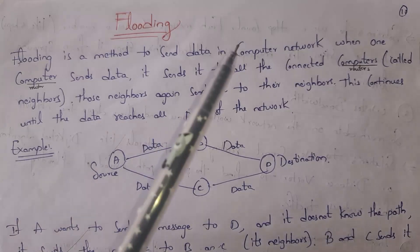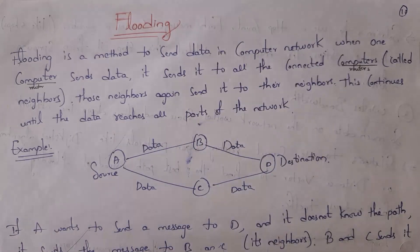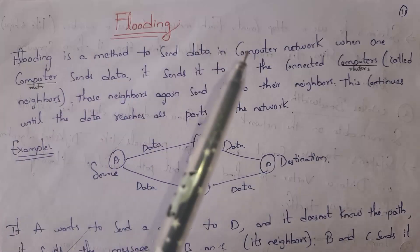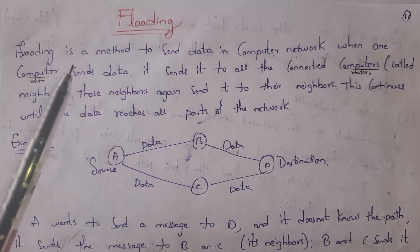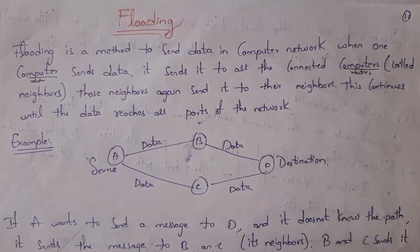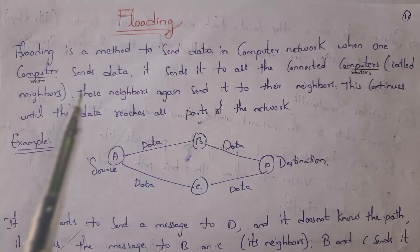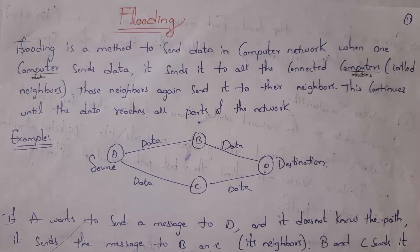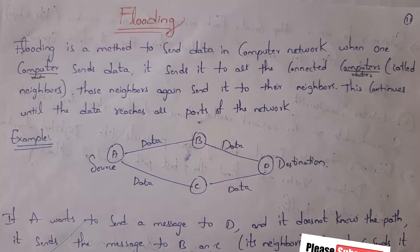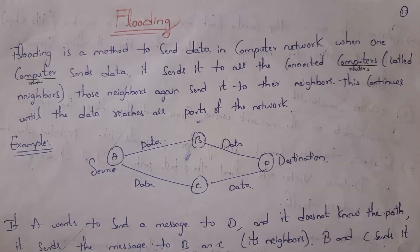Threading is a method to send data in a computer network. When one computer sends data, it sends it to all the connected computers, called neighbors. Those neighbors again send it to their neighbors. This continues until data reaches all parts of the network. There can be any device — for example, a router will send data to all connected routers, and those routers will send data to their neighbors.